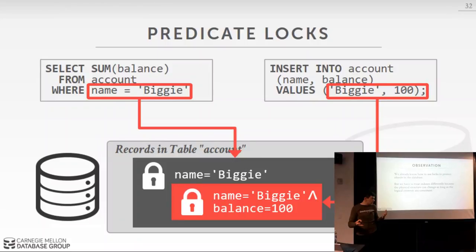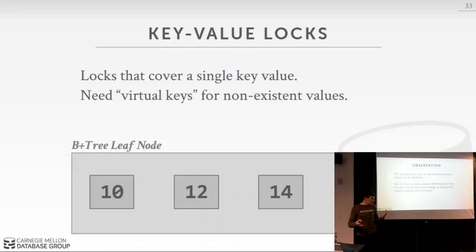Instead of predicate locks, practical techniques acquire locks on indexes as queries run. The most primitive type is the key value lock, which covers a single key. A transaction can lock key 14 to prevent deletion, or hold a virtual key lock on key 14 even if it doesn't exist yet, to reserve it for a future insert. This is another reason why these locks can't be stored inside the index — a virtual key for a nonexistent entry has no physical location.